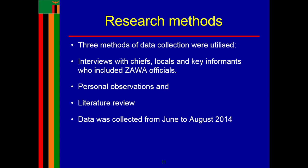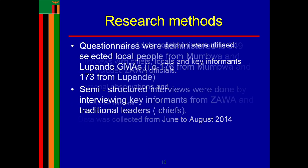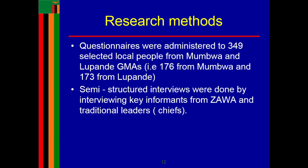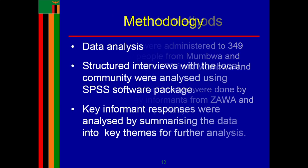Three methods of data collection were utilized: interviews with the chiefs, the local communities, and key informants; personal observations; and literature review. Data was collected from June to August 2014. Questionnaires were administered to 349 selected local people from Mumbwa and Lupande GMA, and the same structured interviews were conducted with key informants from ZAWA and chiefs.